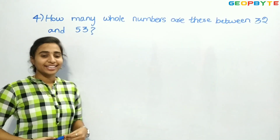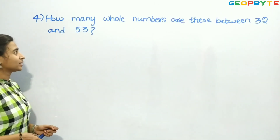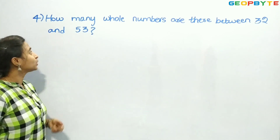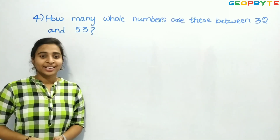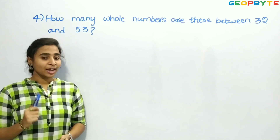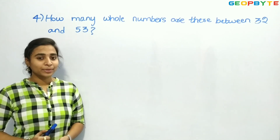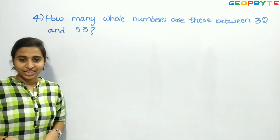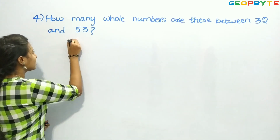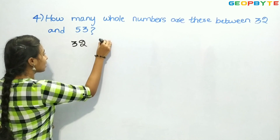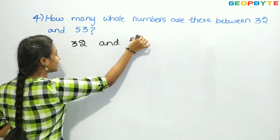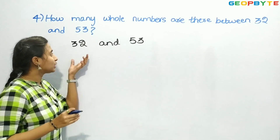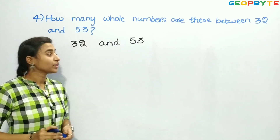Now let us see the fourth question: how many whole numbers are there between 32 and 53? We need to find out how many numbers are in between 32 and 53. We need to write the numbers which come in between 32 and 53.